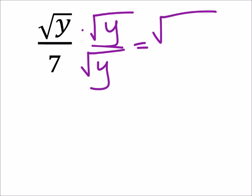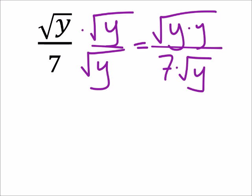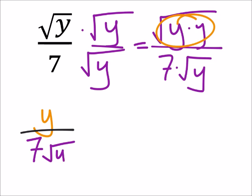That's going to change this to the square root of y times y, all over 7 times the square root of y. And right here again, we've got a pair of these, which is going to pull out just a y. And this now is over 7 times the square root of y. And we rationalized the numerator.